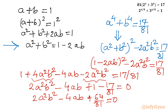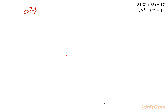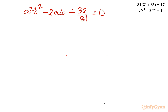The equation is divisible by 2, so dividing through by 2 gives a²b² - 2ab + 32/81 = 0. This is a quadratic equation in ab. Let me treat ab as the variable and apply the quadratic formula (Sridharacharya formula).